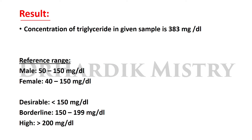Result: the concentration of triglycerides in the given sample is 383 mg/dL. Reference range: normally in males, triglyceride values are 50–150 mg/dL; in females, 40–150 mg/dL.